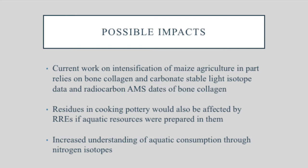Something else to consider with reservoir effects is it's not just bone collagen — residues from cooking pottery would also be affected if aquatic resources were prepared in them in a large enough volume. Another part of this is developing a better baseline for the isotopic food web: because there should be offsets between trophic levels, we should be able to quantify — with some plus-or-minus error — the amount of aquatic consumption that Mississippian, Terminal Late Woodland, Late Woodland, and other individuals were consuming. That plays into being able to do what I would call a calibrated correction.